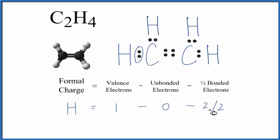1 minus 0 minus 1 equals 0. So the formal charge on the hydrogen is 0, and all of the hydrogens are the same, so they'll all be 0.